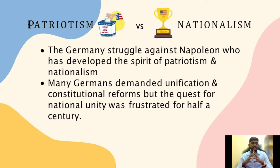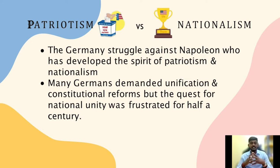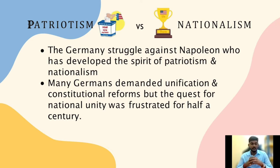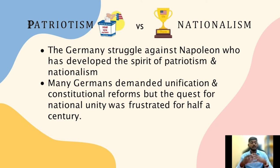In 1815, the Holy Alliance of Russia, Austria, and Prussia was organized as a means of suppressing revolution wherever it might appear. Minor revolutionary outbursts in Germany from 1830 to 1832 were repressed, and the major upheavals of 1848 were crushed by Prussian and Austrian troops.